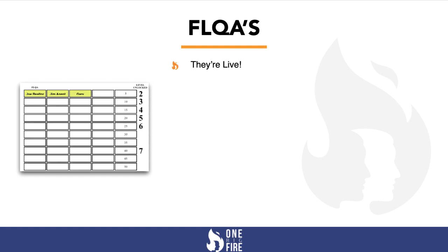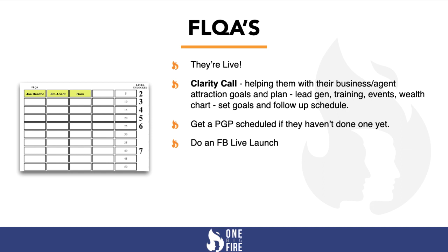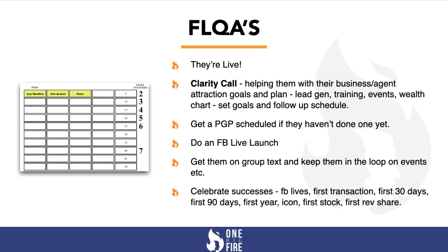Your FLQAs are agents who are actually live — they've joined officially with eXp. With these agents, get them on a clarity call and help them with their business by setting agent attraction goals and a plan. Some agents will value lead generation, others training or live events, and some might want help filling out their wealth chart. Help them set goals and schedule follow-ups. Encourage them to get a PGP scheduled and do a Facebook live announcement for their launch. Get them on the group text, keep them in the loop of upcoming events, and celebrate their successes with Facebook lives around their first transaction, first 30 or 90 days, first year, hitting icon, earning their first stock, or their first revenue share.